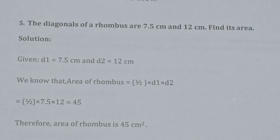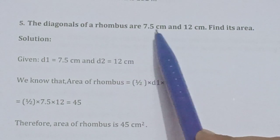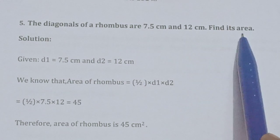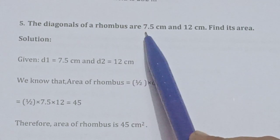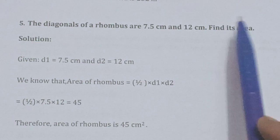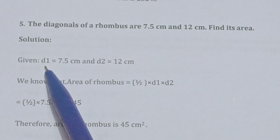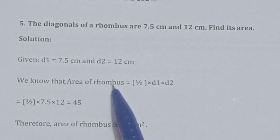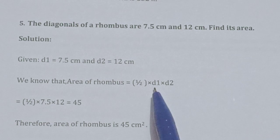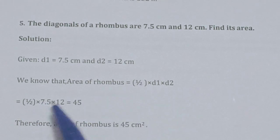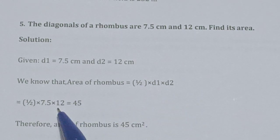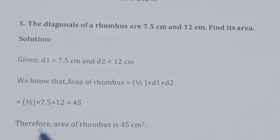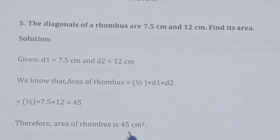Question 5: The diagonals of a rhombus are 7.5 cm and 12 cm. Find its area. Diagonal 1 is 7.5 cm and diagonal 2 is 12 cm. Area of rhombus equals half into d1 into d2, so half into 7.5 into 12 equals 45 cm square. Therefore the area of the rhombus is 45 cm square.